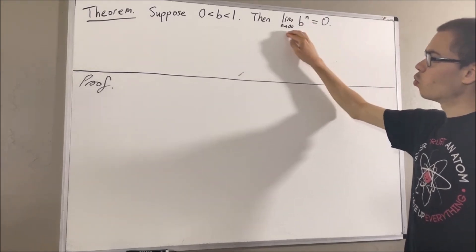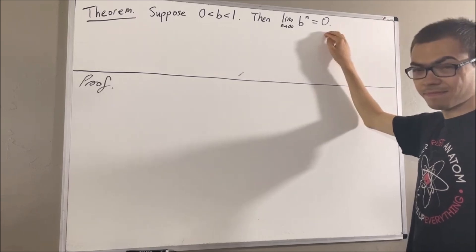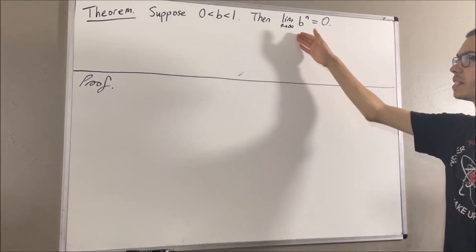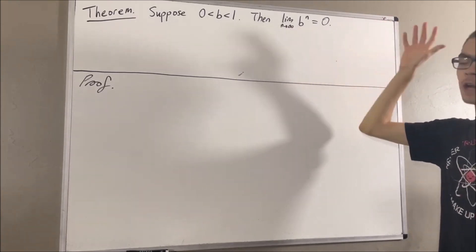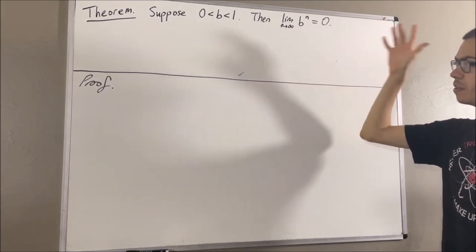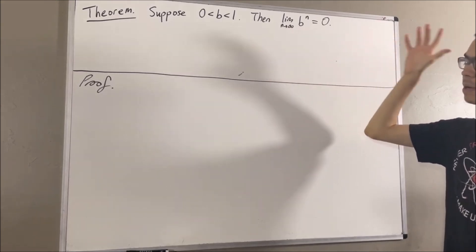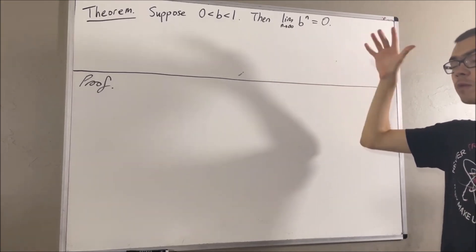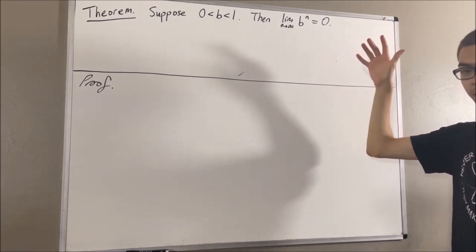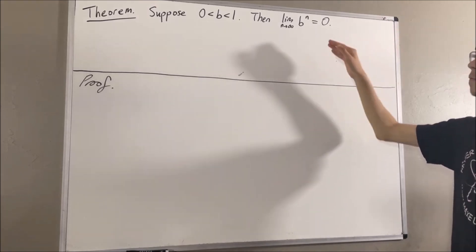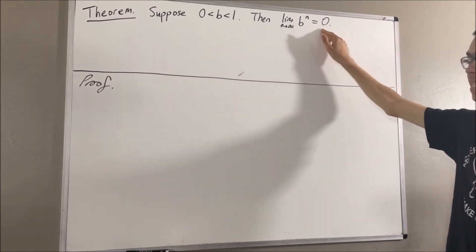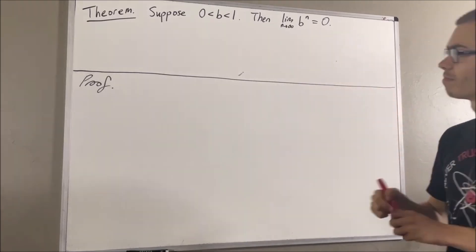Now, what does this mean? Well, by definition of limit of a sequence, this means for every epsilon greater than 0, there exists a positive integer k, such that for all positive integers n greater than or equal to k, the absolute value of b to the power of n minus 0 is less than epsilon.